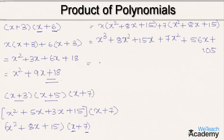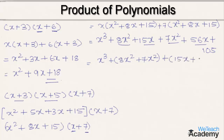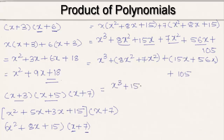Let us group the like terms. We have only one x cubed term. For the x squared terms: 8x squared plus 7x squared gives 15x squared. For the x terms: 15x plus 56x gives 71x. So the final result is x cubed plus 15x squared plus 71x plus 105.